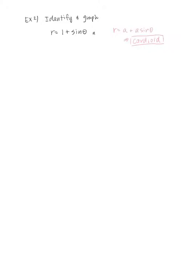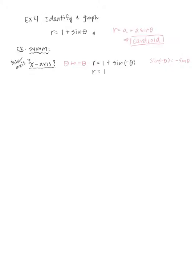Let me show you how the textbook does it — first check for symmetry. For the polar axis (x-axis): replace θ with negative θ. We get r equals 1 plus sine(−θ). Since sine is an odd function, sine(−θ) equals negative sine θ, giving 1 minus sine θ. That is not the original equation, so it is not symmetric with respect to the x-axis.